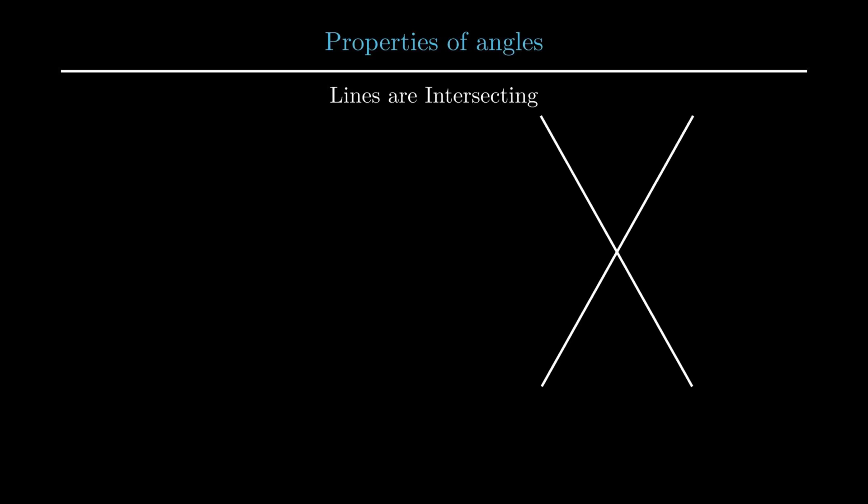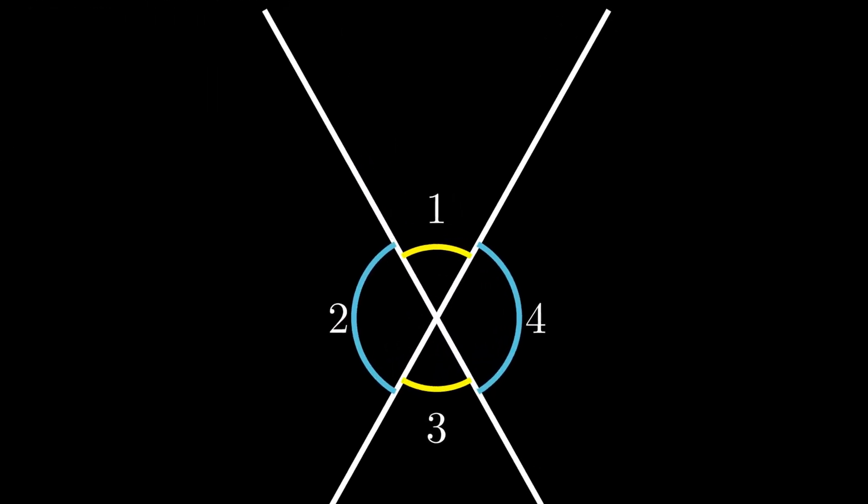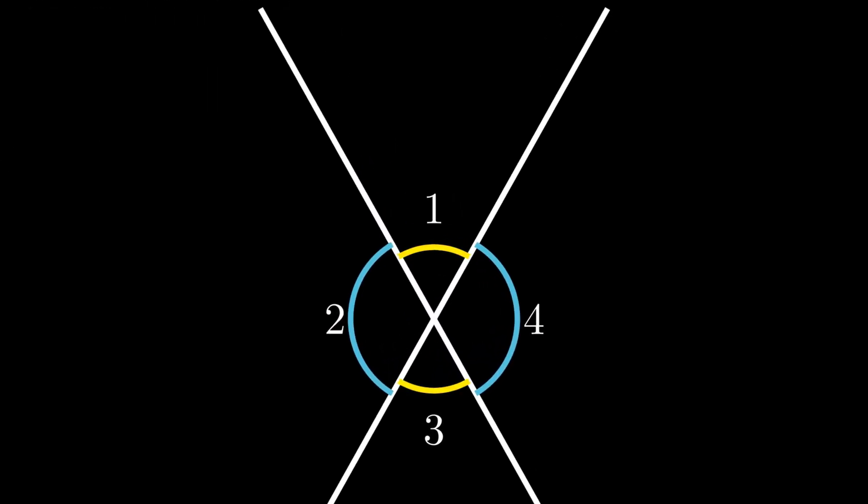In case of intersecting lines, vertically opposite angles are equal. From the figure, angle 1 equals angle 3 and angle 2 equals angle 4.